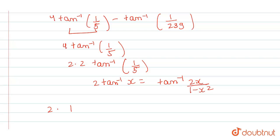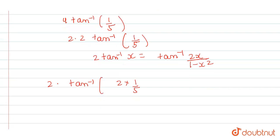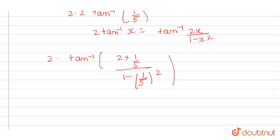It will become 2tan inverse of 2 into 1 by 5 divided by 1 minus 1 by 5 whole square. From here, we get value as 2tan inverse of 5 by 12.